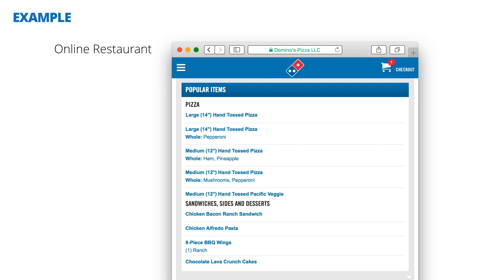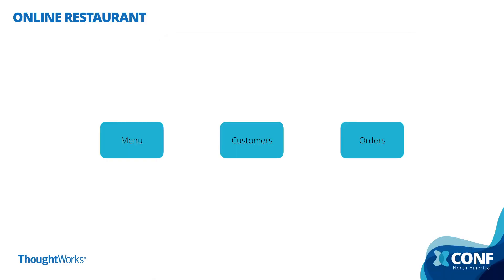I want to start with an example. Let's imagine an online restaurant where you have customers — they can choose items from a menu and they can place orders. A very simple data model that could be implemented with three separate services: menu, customers, and orders. Each one of those services has independent data sources and they exchange information directly and synchronously.